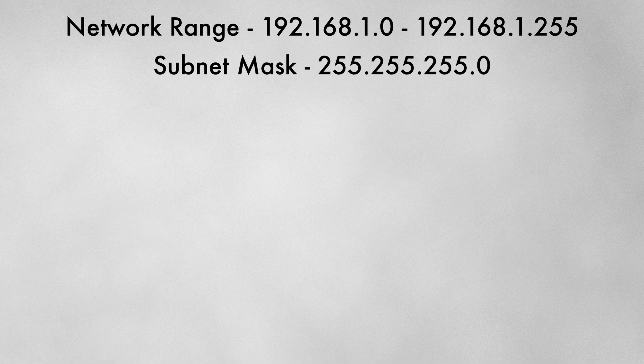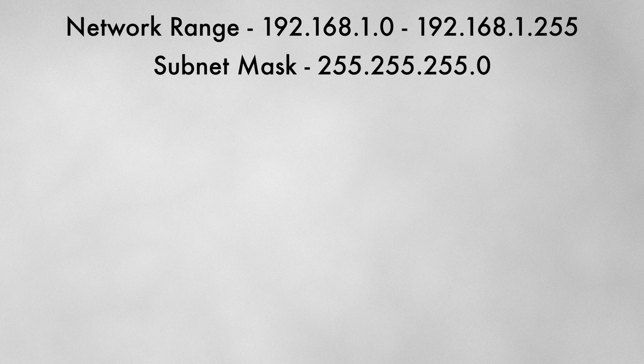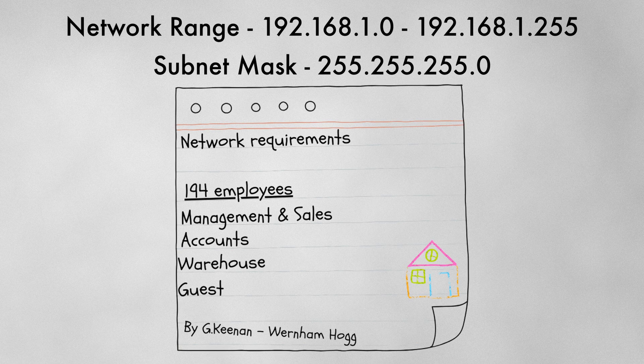We need to tailor the network to the number of host devices. The network range is 192.168.1.0 through to 255 with subnet mask 255.255.255.0. The departments are: Management and Sales Reps with 100 devices, Accounts with 53 devices, Warehouse with 12 devices, and Guest with scope for 28 devices.